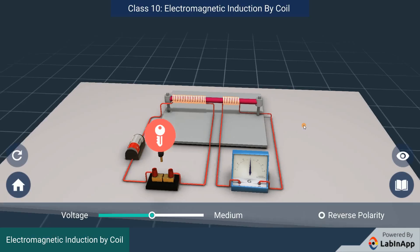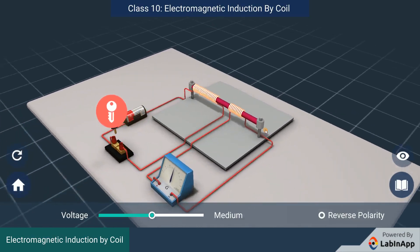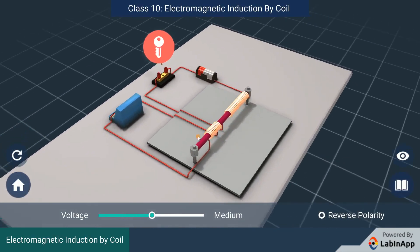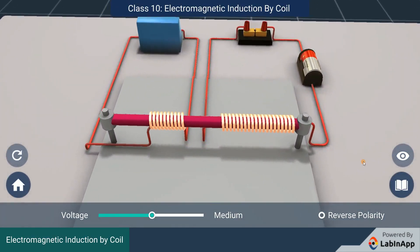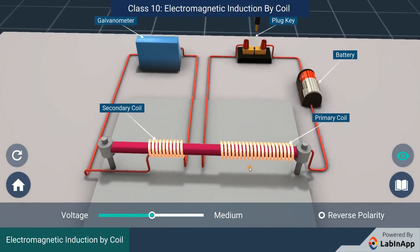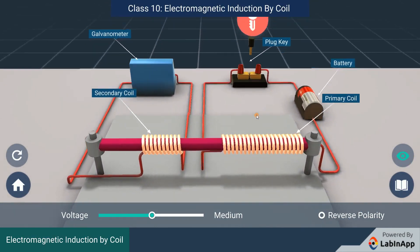Let us study electromagnetic induction with the help of a current carrying coil. We have taken two coils of copper wire with a large number of turns wound on a non-conducting roll.